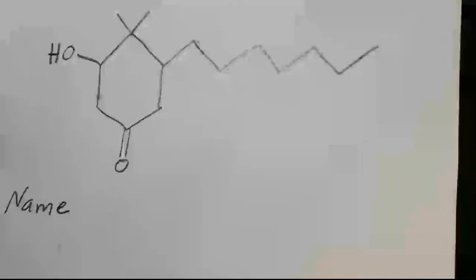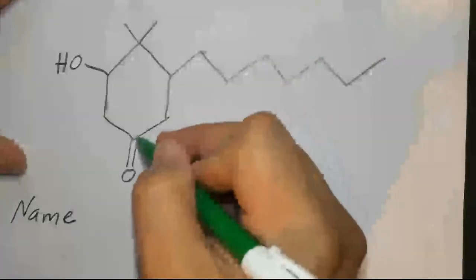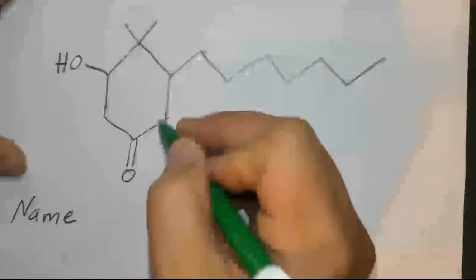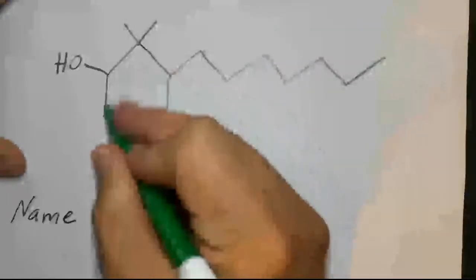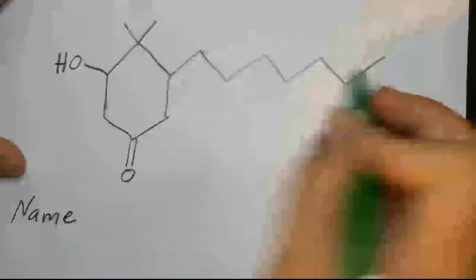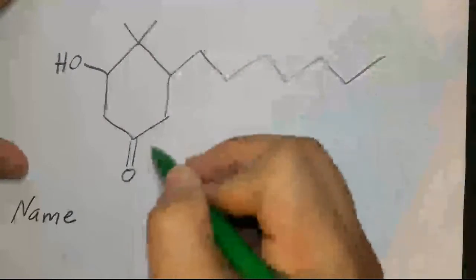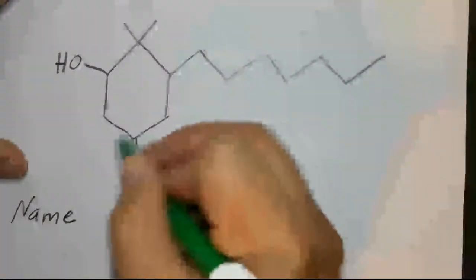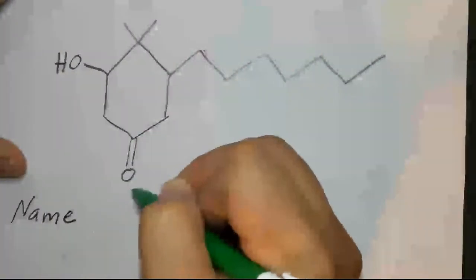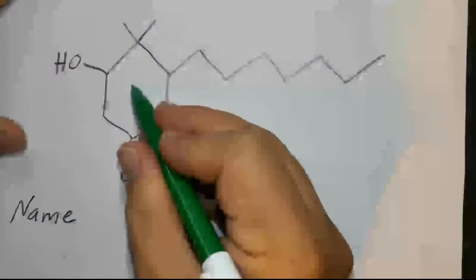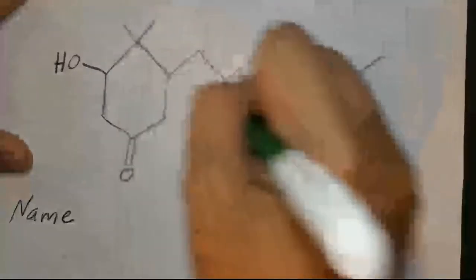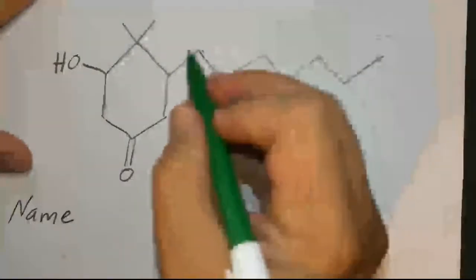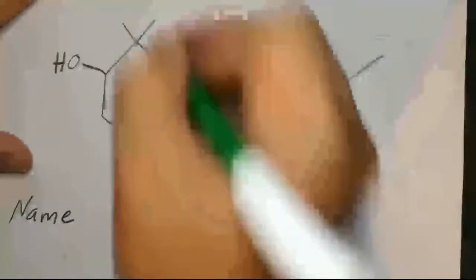Since the ketone is the higher priority group and it's on the ring too, that makes this ring be the parent structure, not this chain. Even though the chain is longer, the presence of the functional group really defines this ring as the parent chain. So the longer chain becomes a substituent.